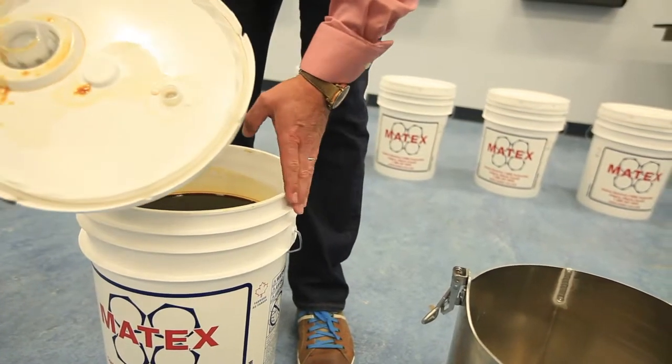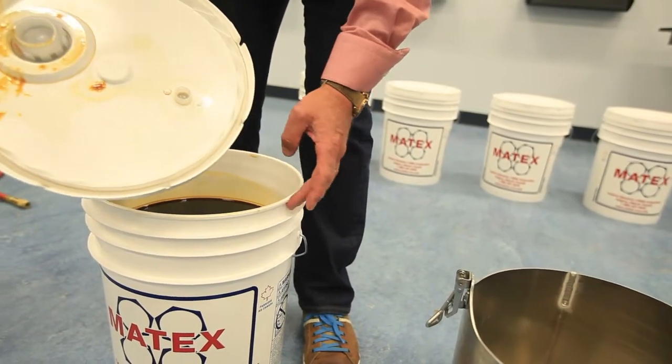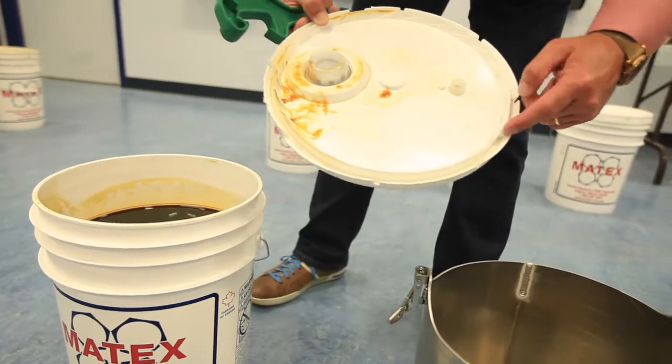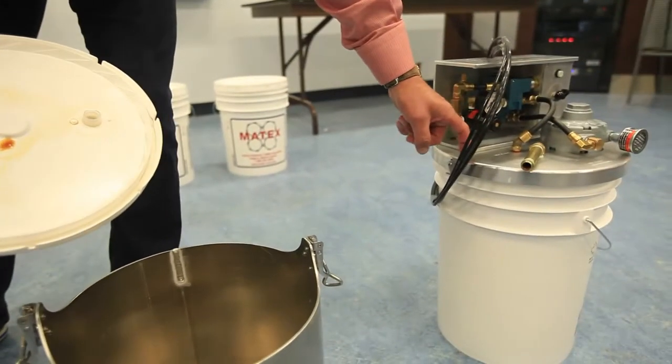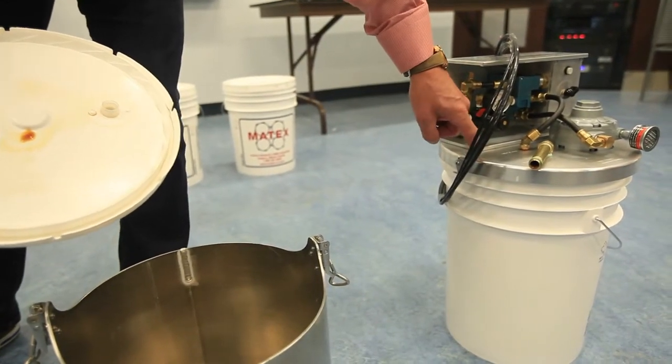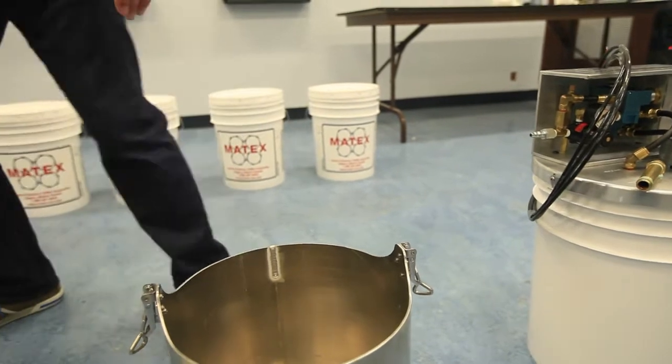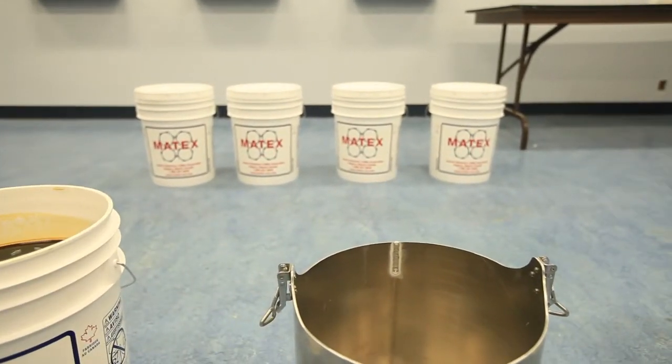That keeps everything watertight, airtight nice and sealed in there so nothing gets in. This o-ring is in underneath this base plate here as well. So don't worry about any of that. You're not going to get any dirt or debris in there that way.